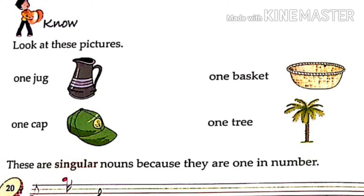So students, as you can see in the screen, there are few pictures. On the left-hand side, you can see a picture of one jug and next to it, a picture of one cap. On the right side, you can see a picture of one basket and next to it, a picture of one tree. What is common about all of these things? That these are only one in number — one jug, one cap, one basket, one tree. So these are singular nouns because they are one in number.